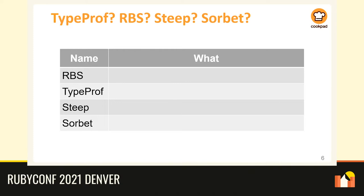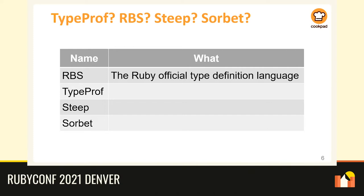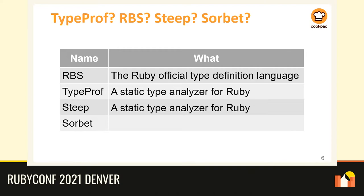If you've heard about the type system for Ruby 3 before, you may be confused because there are many names: TypeProf, RBS, Steep, Sorbet, etc. RBS is Ruby's official type definition language. TypeProf, Steep, and Sorbet are static type analyzers. RBS is the name of a dedicated mini-language to describe class and method signatures for Ruby code, and the others are names of static type analyzers.